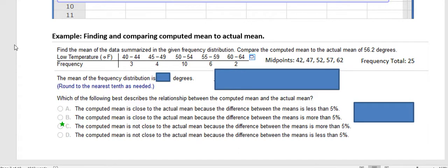When you're given a range like 40 to 42, then a frequency of 3, what you have to do is use the midpoints.